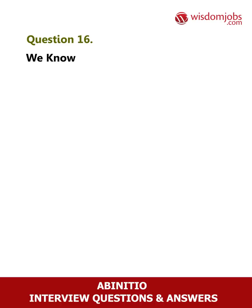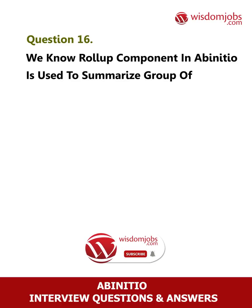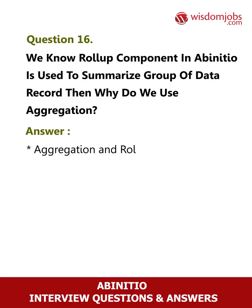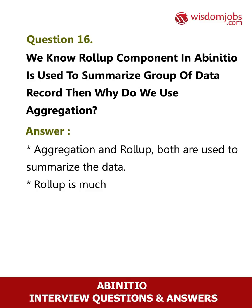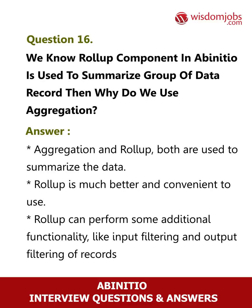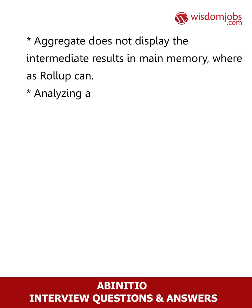Question 16: We know the rollup component in Ab Initio is used to summarize a group of data records, then why do we use aggregation? Answer: Both aggregation and rollup are used to summarize data. Rollup is much better and more convenient to use. Rollup can perform additional functionality like input filtering and output filtering of records. Aggregate does not display the intermediate results in main memory, whereas rollup can.